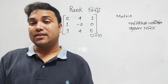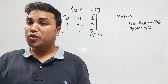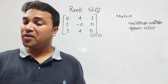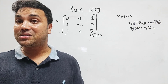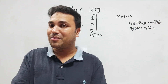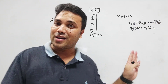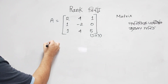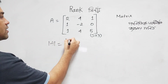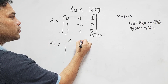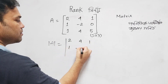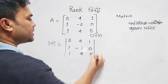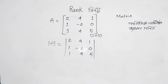The rank is 9. Let's see: A is 9. The matrix entries are 2, 4, 1 — then 1, 2, 0 — then 1, 4, 5. The rank is 9.